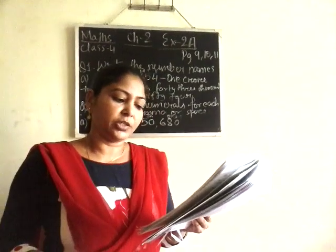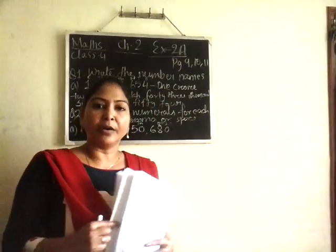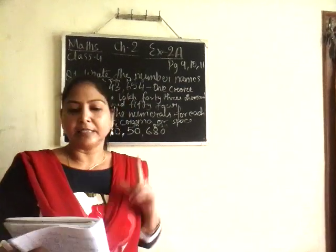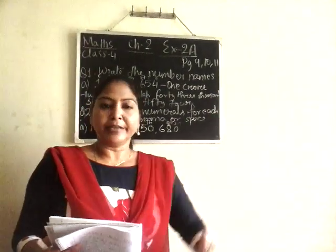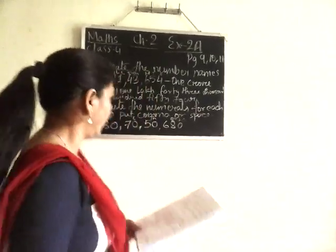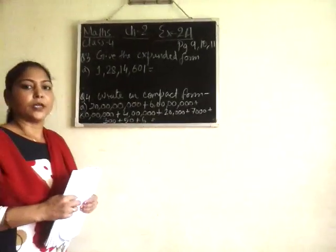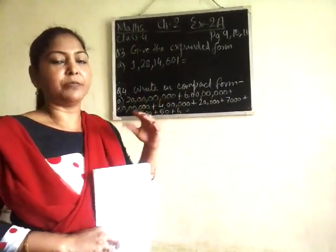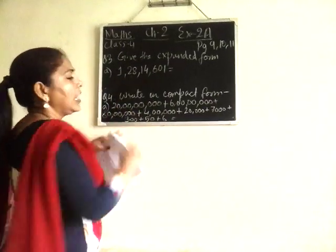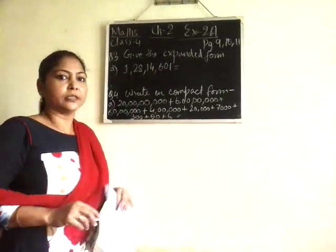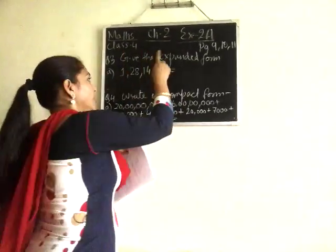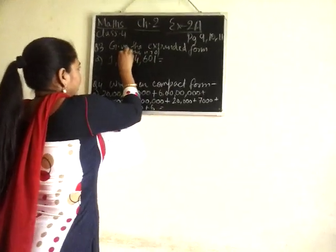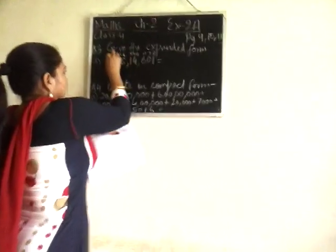Now we move to question number 3: give the expanded form. As you have already done in your previous assignments, I have already explained you how to do that. I will just give one example over here and rest of the questions you can do by yourself. As you can see, I have written question number 3 where you have to write the numbers in the expanded form. What you will do is first write the place value of individual digits: ones, tens, hundreds, thousands, ten thousands, lakhs, ten lakhs, and crores.